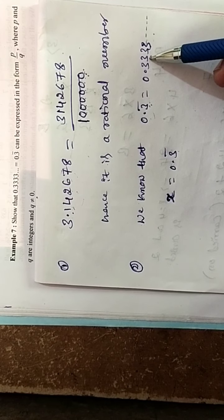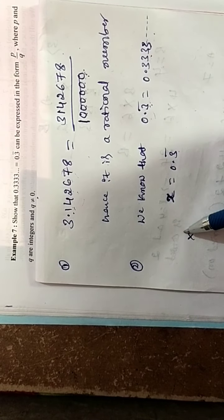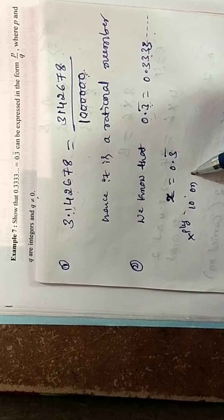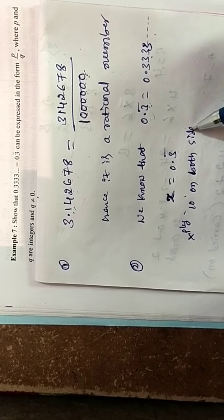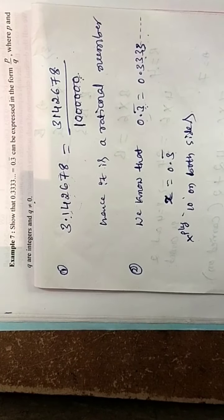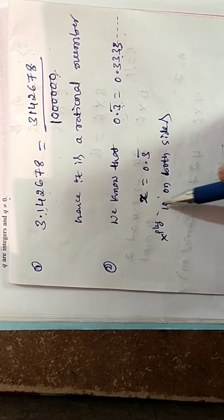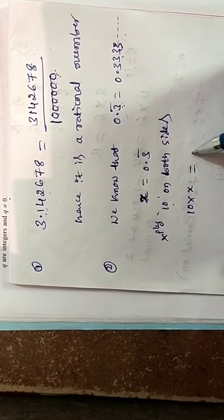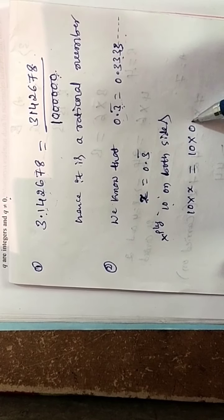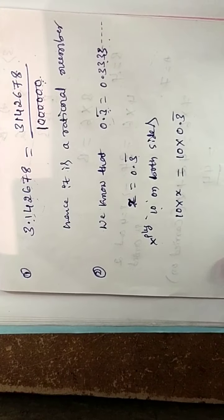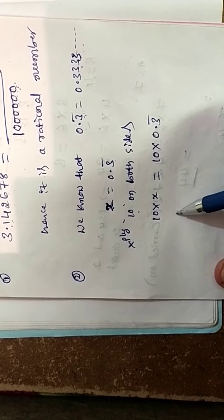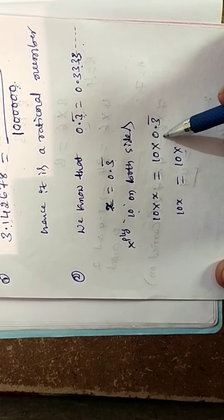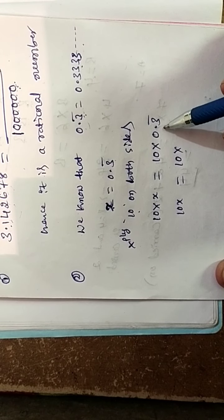Now only one number is repeating here. So multiply 10 on both sides. 10 into x is equal to 10 into 0.3 bar. So 10x is equal to 10 into 0.3 bar.